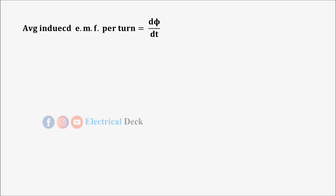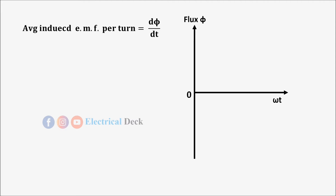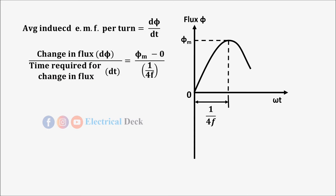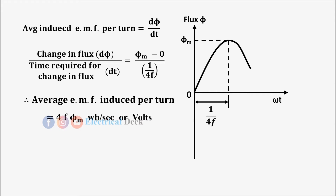From the sinusoidal waveform, the time taken for flux to go from zero to its maximum value φm is 1/4f. Therefore, the change in flux dφ is from zero to φm, and the time dt is 1/4f. The average value of EMF induced per turn is therefore 4f·φm weber per second, or volts. Since the flux φ is sinusoidal, the induced EMF in each turn of both windings is also sinusoidal in nature.